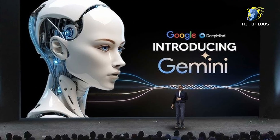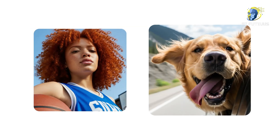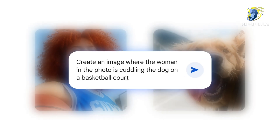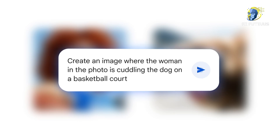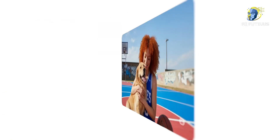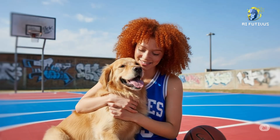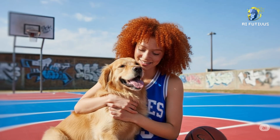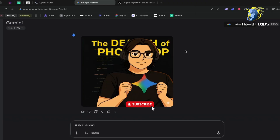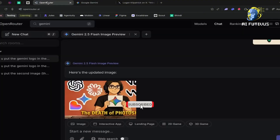And the proof? Before it was even announced, people were already ranking it as the best AI image editor in the world. Today it's official — Nano Banana is now Gemini 2.5 Flash Image, and it's inside the Gemini app for you and me to use. But what makes it special? Let's break it down.